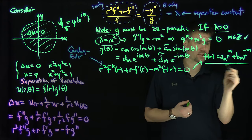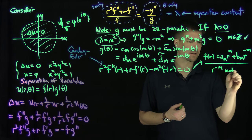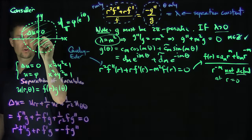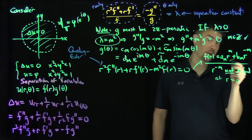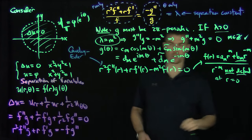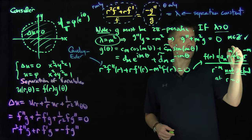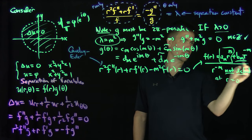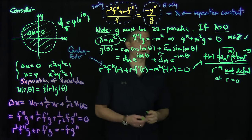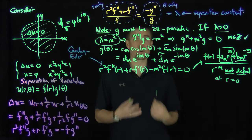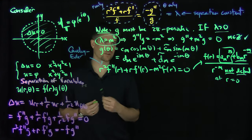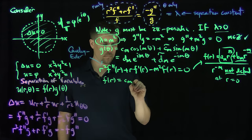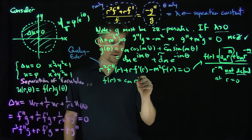We exclude r^{−m} because it is not defined at r = 0, and r = 0 is interior to our domain. So when m is positive we take r^m, and when m is negative we take the solution that keeps the exponent positive. In both cases f(r) = c_m r^{|m|}, using the absolute value of m.